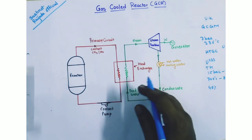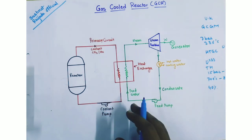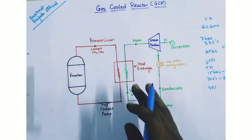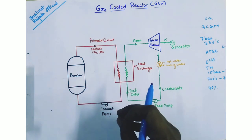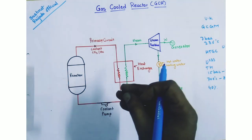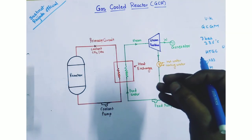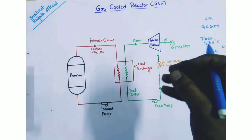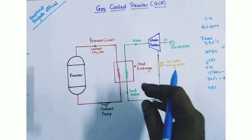As we are using gas as a coolant, blowers are required to circulate the gas through the reactor. Therefore, the power required for the blowers is large compared to the water pump or coolant pump.